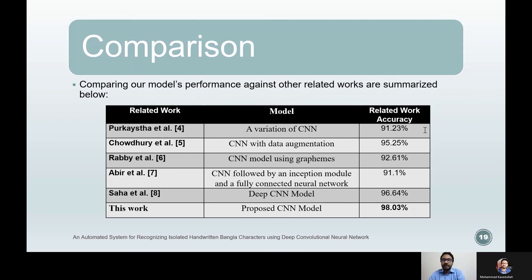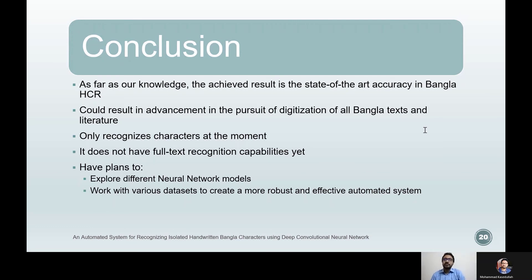A summary of accuracy in comparison to other related works in Bangla HCR is depicted here. Considering our proposed model's accuracy compared to other models described in related work, we conclude that the proposed model performs better than previously envisioned techniques. This approach could result in advancement in the digitization of all Bangla texts and literature. Our model only recognizes characters at the moment and does not have full text recognition capabilities yet. However, its performance suggests that further modifications might help create a complete Bangla handwritten text recognition system. In the future, we plan to explore different neural network models and various datasets to create a more robust and effective automated system.